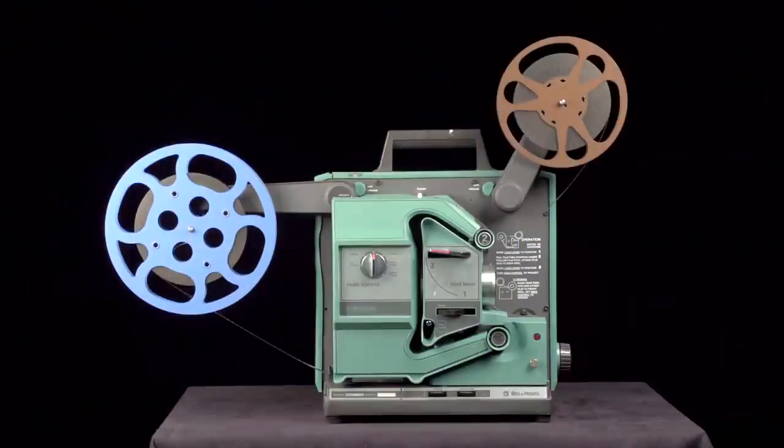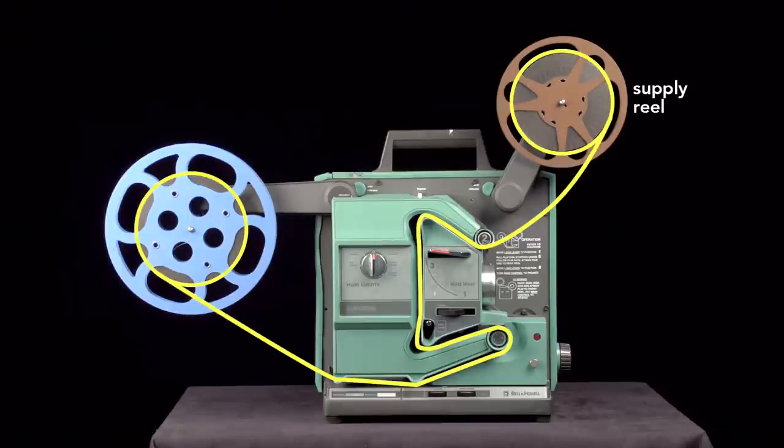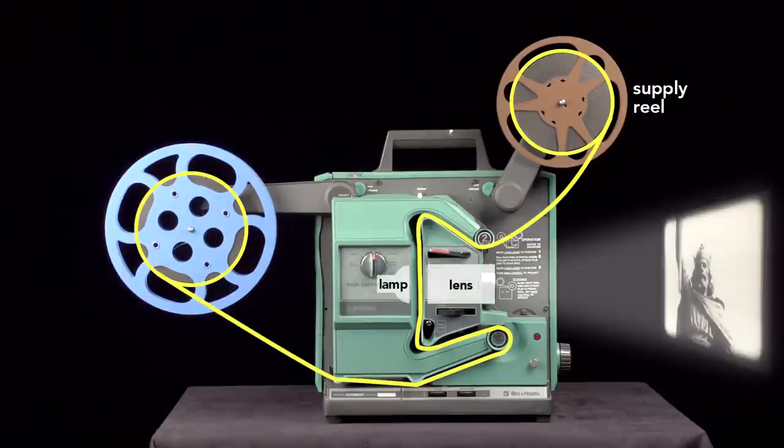To create the illusion of movement, a series of still images, the film, is pulled off the supply reel, threaded in between the lamp and lens so the image can be projected, then run across the sound drum, and finally coiled onto the take-up reel. However, it isn't as simple as that sounds.